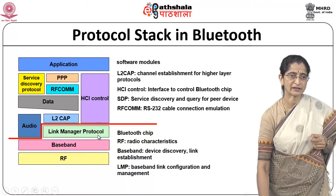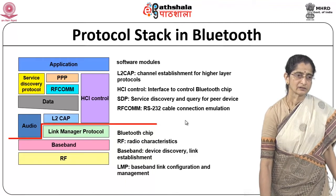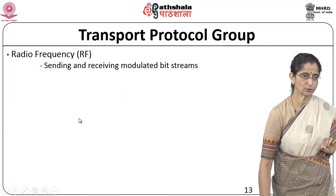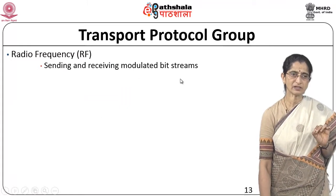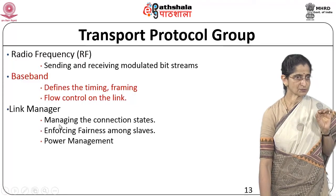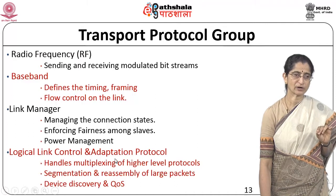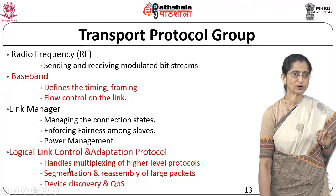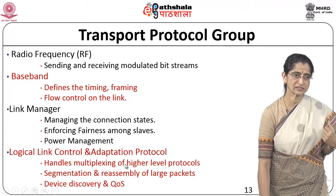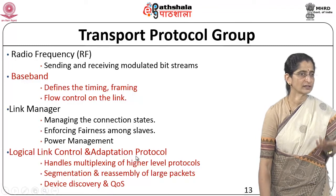The RF, baseband, and LMP layers are normally implemented on the Bluetooth chip itself, while the others are available as software modules. The lower layers plus L2CAP and audio are referred to as the transport protocol group. The RF module sends and receives modulated bit streams. Baseband defines timing, framing, and flow control. The Link Manager manages connection states, enforces fairness among slaves, and handles power management. L2CAP handles multiplexing of higher-level protocols, segmentation and reassembly of larger packets, device discovery, and quality of service.